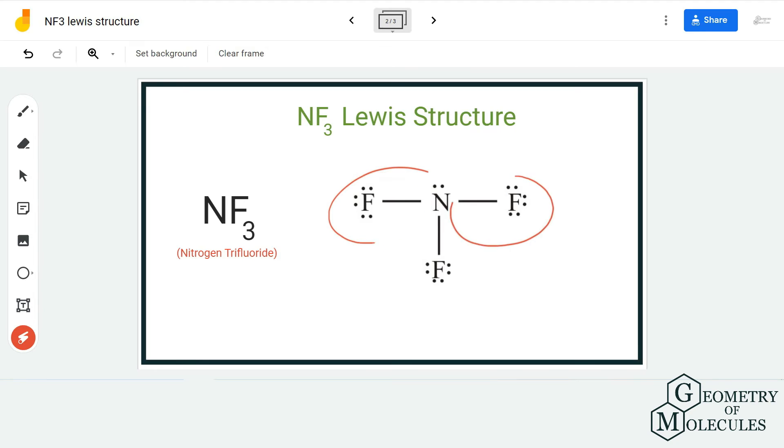Now if you look at this Lewis structure, we have complete octets for all atoms. All the fluorine atoms have eight valence electrons in their outer shell which means they have a complete octet. Even nitrogen atom has a complete octet because it has eight valence electrons in its outer shell.